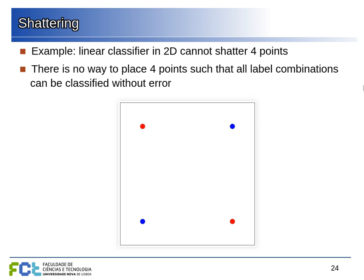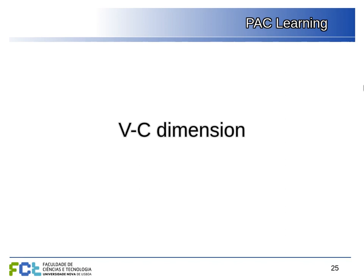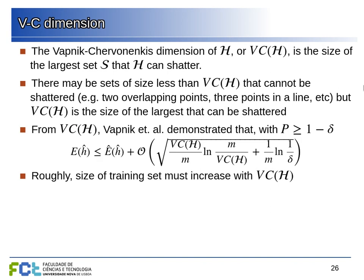This leads us to the Vapnik-Chervonenkis (VC) dimension, which is the largest set of points that a hypothesis class can shatter. This is one of the ways of characterizing the power of a classifier when we have infinite sets of hypotheses. It's not so much the number of hypotheses that matters, but the shattering power or VC dimension of the hypothesis set.